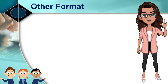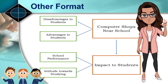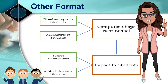Here is an example of a conceptual framework by Gatchalian et al., 2019. In the orange boxes, we have 'computer shops near school' — that would be the cost. The effects, indicated by the arrow, would be disadvantages to students, advantages to students, and then impact to students. That is related, as indicated by the solid line, to school performance and attitude towards studying.